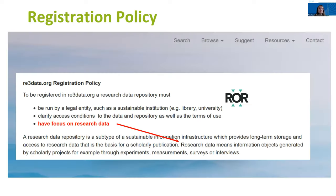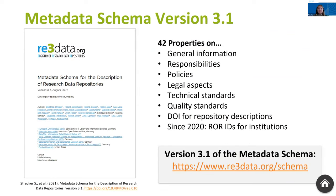We use three basic criteria to decide if a service will be indexed in Re3Data: a service has to be focused on research data, be operated by a legal entity with an organizational framework providing sustainability such as a library or university, and clarify access conditions and provide terms of use. Our metadata schema now consists of 42 categories to describe data repositories, including general information such as repository name or discipline, as well as information about participating institutions and data standards. Version 3.1 of our schema has been published very recently, and soon towards the end of the CAREF project, there will be a 4.0 version release.